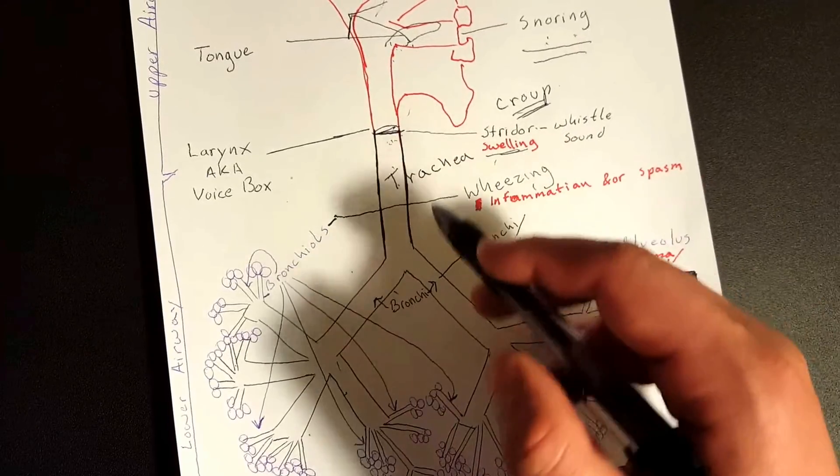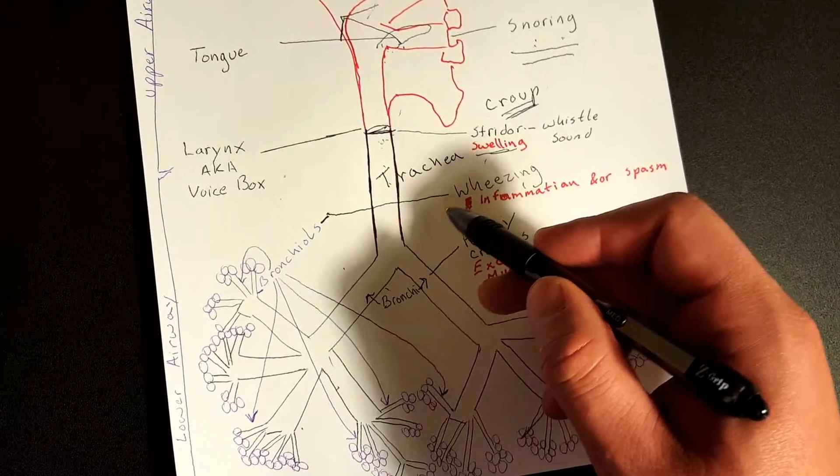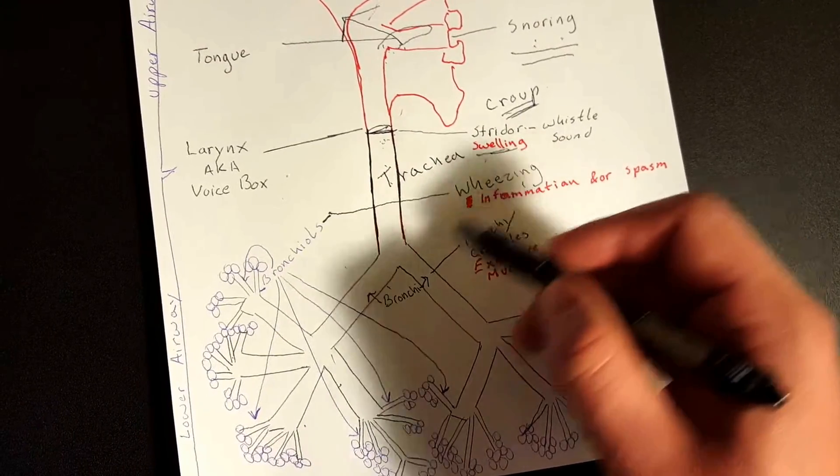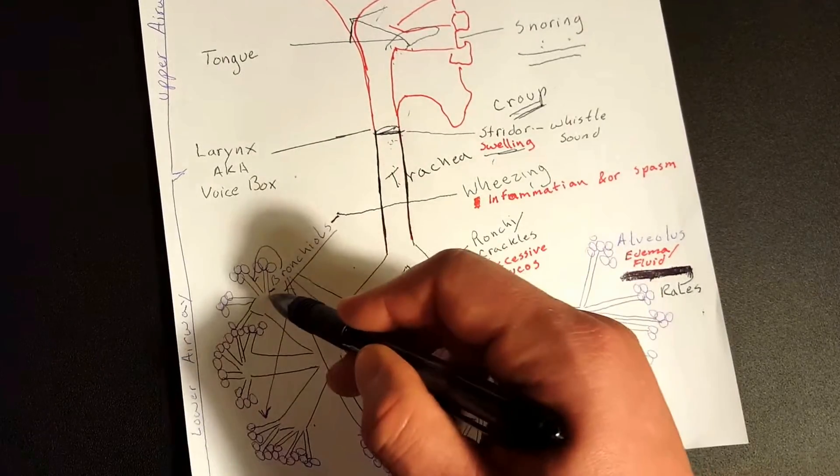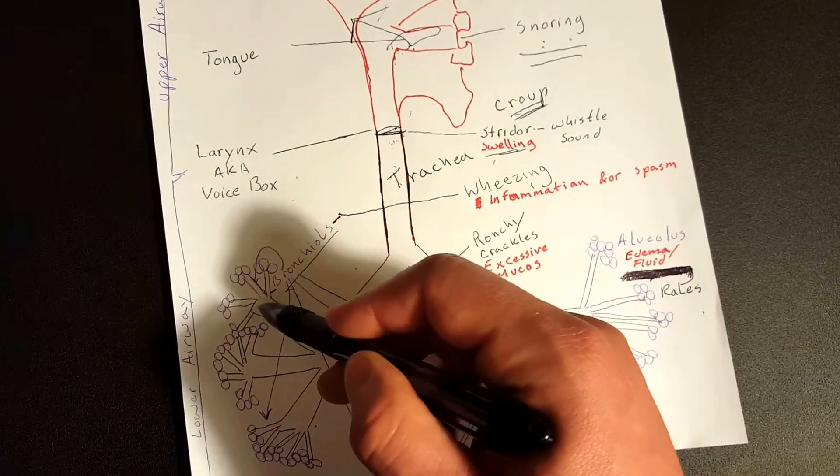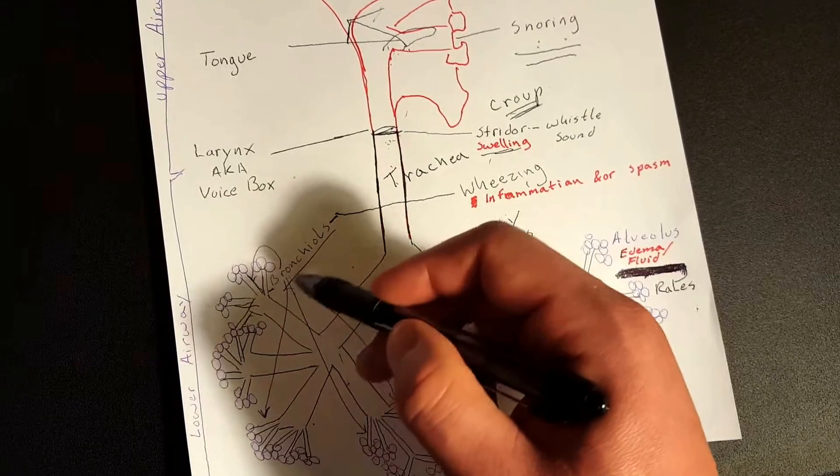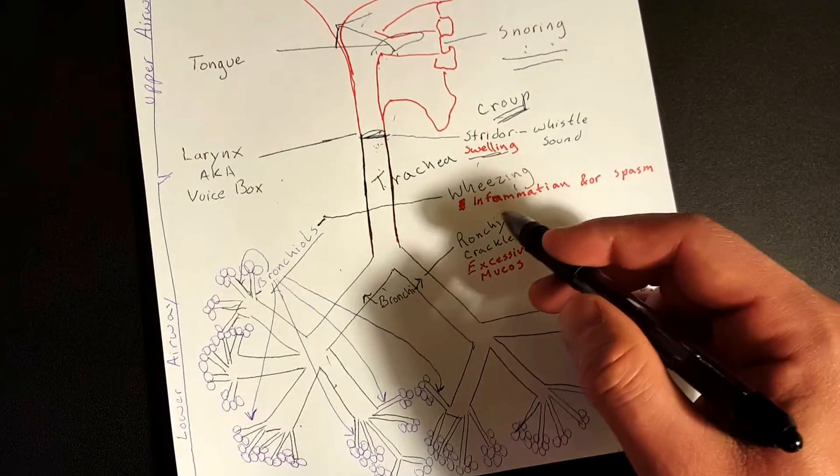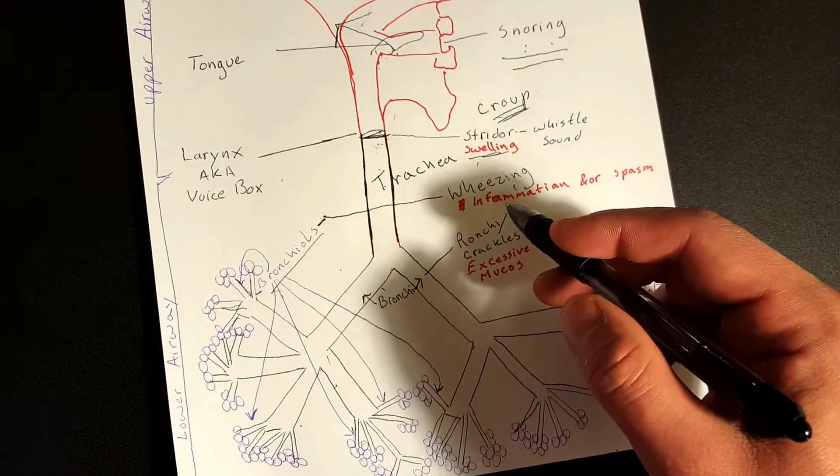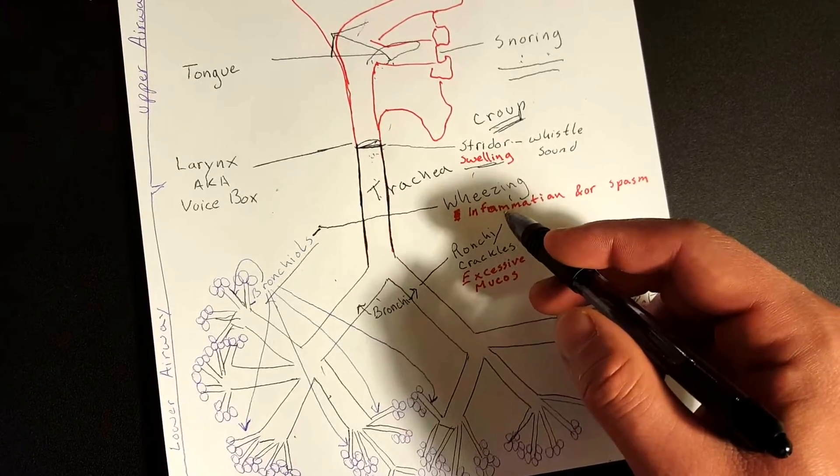So if you have wheezing, for example wheezing, we're talking about a bronchiole issue. So the little tiny tubes right before you actually get to the alveoli. If you have wheezing, it could be from an allergic reaction, asthma, a whole bunch of stuff.